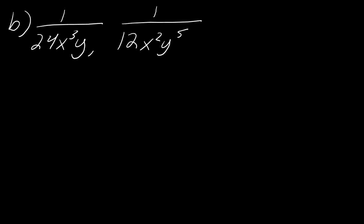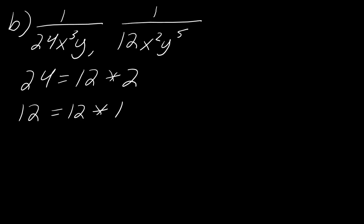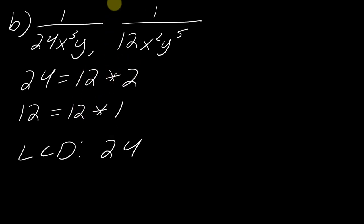Here's one more to try. With 24 and 12, the largest number that divides both is 12. So 24 is 12 times 2 and 12 is 12 times 1. The LCD number part is therefore 24, and combining with the variable part gives 24x³y⁵.